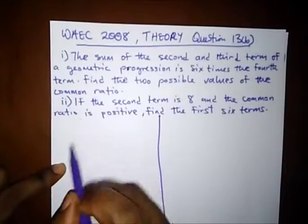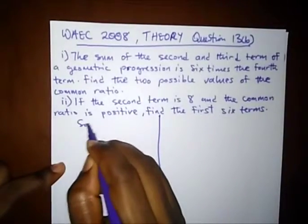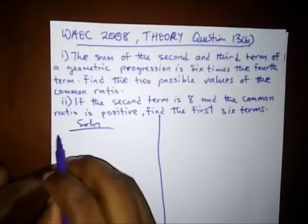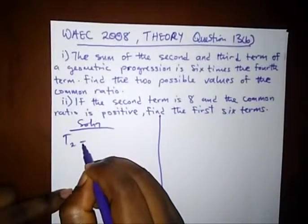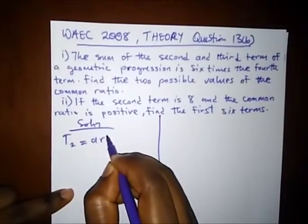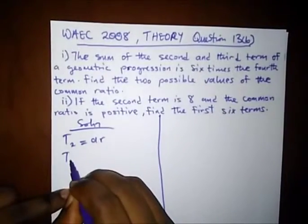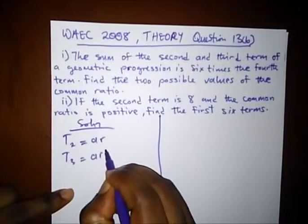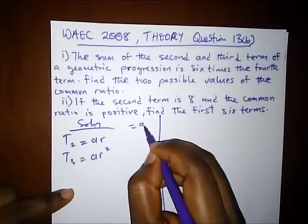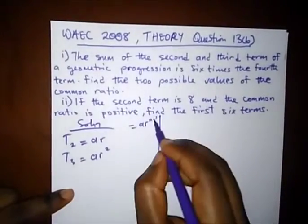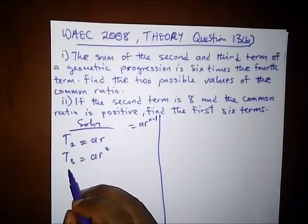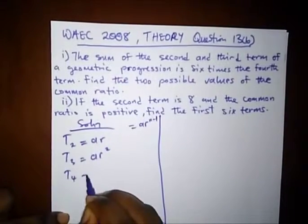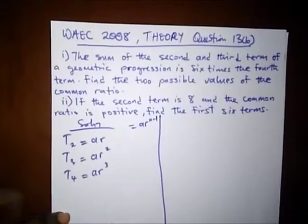This is a long one, so let's start. The sum of the second and the third term: the second term will be AR, then the third term will be AR squared. Remembering this formula is 6 times the fourth term, and the fourth term will be AR cubed.